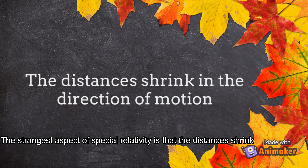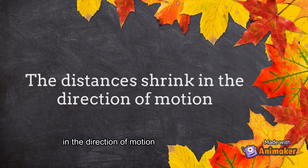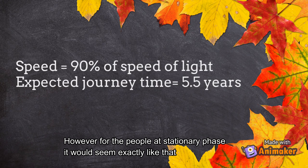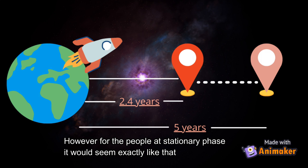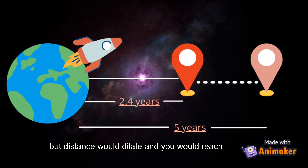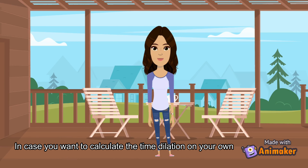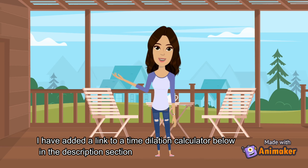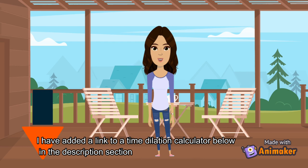The strangest aspect of special relativity is that distances shrink in the direction of motion. When we decide to travel to a point which is 5 light years away at 90% of light speed, we are expected to reach the destination in 5.5 years. However, for the people at the stationary phase, it would seem exactly like that. But for the travellers inside the spaceship, not only time but distance would dilate, and you would reach the point in only 2.4 years.